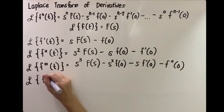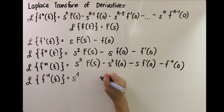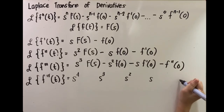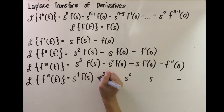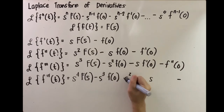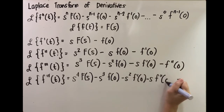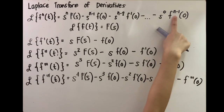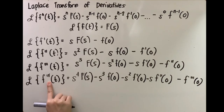Let's try the Laplace transform of the fourth derivative of t. That means s to the fourth, s cubed, s squared, s raised to 1, until the last term. So: s to the fourth paired with F of s, minus s cubed paired with f of 0, minus s squared paired with f prime of 0, minus s times f double prime of 0, ending with f triple prime of 0. The last function is one order lesser than the given derivative.